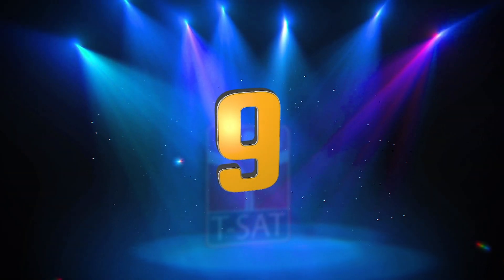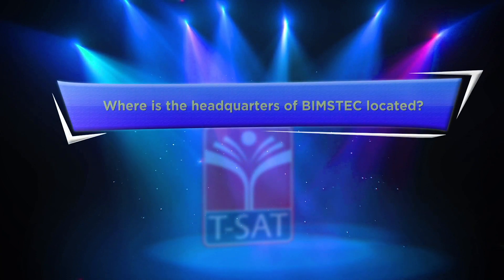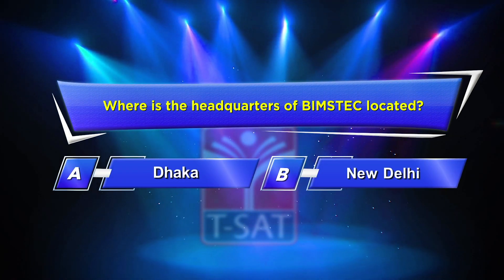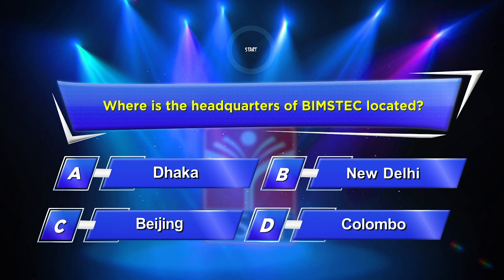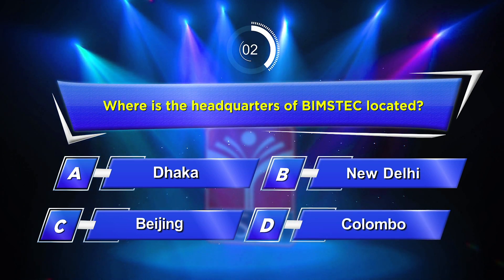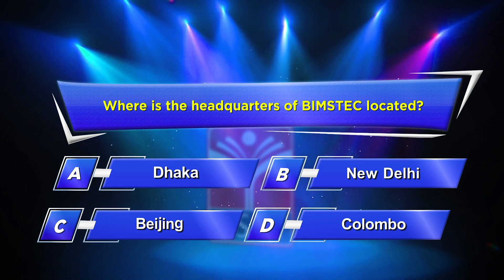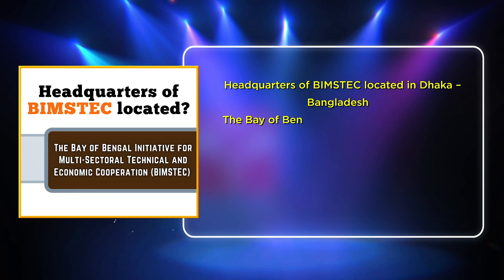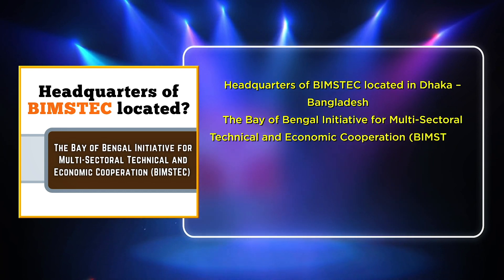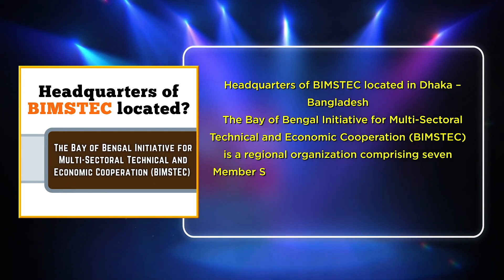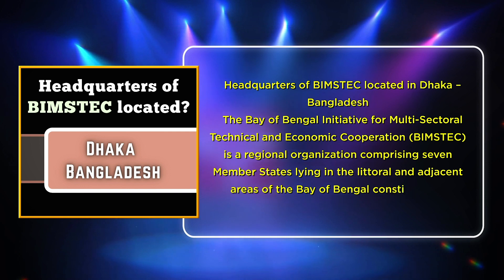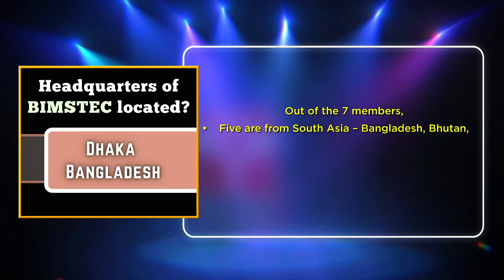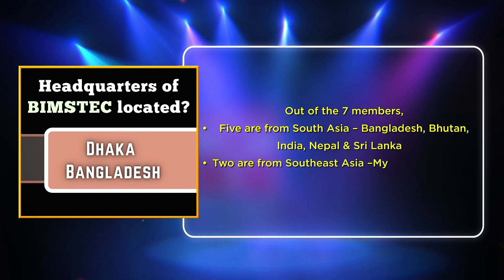Interesting question about summits and conferences. Ninth question: where is the headquarters of BIMSTEC located? Option A: Dhaka. Option B: Delhi. Option C: Beijing. Option D: Colombo. Your time starts now. The correct answer is Option A — the headquarters of BIMSTEC is located in Dhaka, Bangladesh. The Bay of Bengal Initiative for Multisectoral Technical and Economic Cooperation is a regional organization comprising seven member states lying in the littoral and adjacent areas of the Bay of Bengal. Of the seven members, five are from South Asia — Bangladesh, Bhutan, India, Nepal, and Sri Lanka — and two are from Southeast Asia — Myanmar and Thailand.